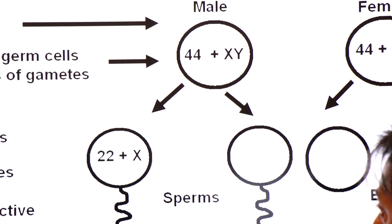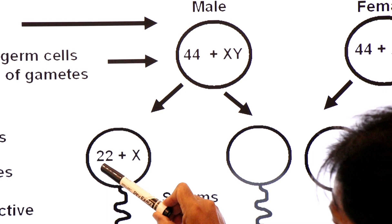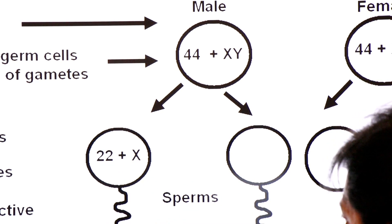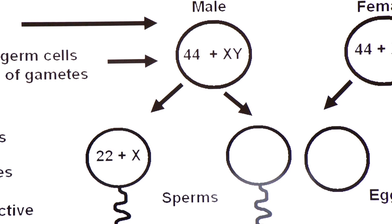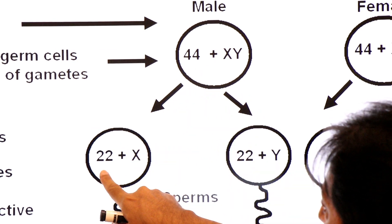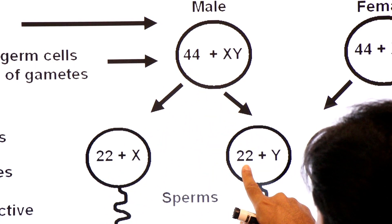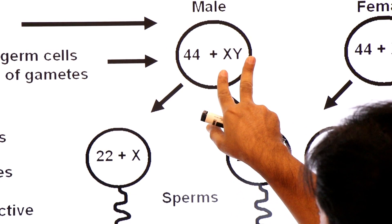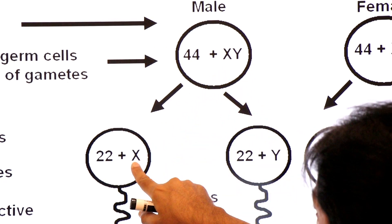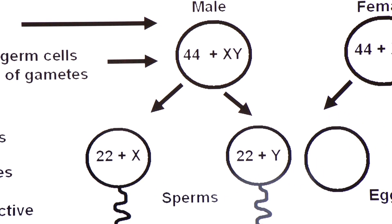So the first sperm has 22 plus X — 23 chromosomes total, where 22 are autosomes and one is the X sex chromosome. Out of the 44 autosomes, 22 go to one sperm and 22 go to another sperm. From the sex chromosomes, X goes to one sperm and Y goes to another sperm.